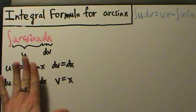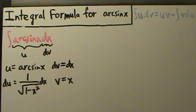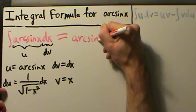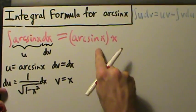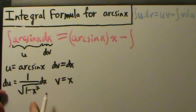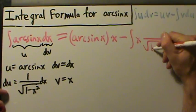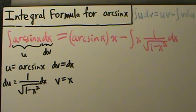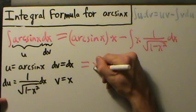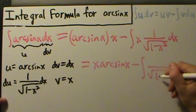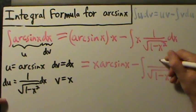Let's go ahead and apply these into the formula. This is going to be uv, so that's arc sine of x times x — that's uv — minus the integral of v du. So that equals x times arc sine of x, minus the integral of x over the square root of 1 minus x squared, dx.